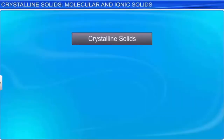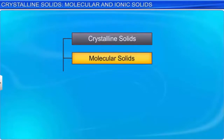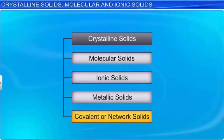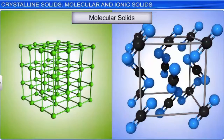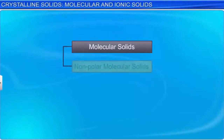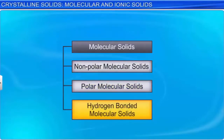On the basis of the type of forces holding the constituent particles together, crystalline solids are broadly classified into molecular solids, ionic solids, metallic solids, and covalent or network solids. The constituent particles in molecular solids are either atoms or molecules, held together by weak forces of attraction. On the basis of the nature of the intermolecular forces of attraction, molecular solids are divided further into non-polar molecular solids, polar molecular solids, and hydrogen-bonded molecular solids.